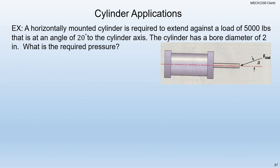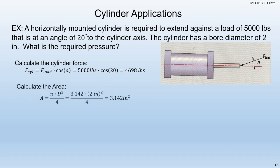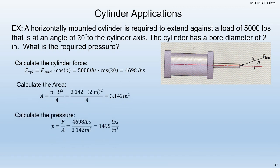For the bearing force, it's going to be 15,000 times sine of 30. So there's how we calculate the two different forces — the cylinder force and the bearing force. You might also get a problem like this: a horizontal mounted cylinder is required to extend against a load of 5,000 pounds at an angle of 20 degrees to the cylinder axis. The cylinder has a bore diameter of 2 inches. What is the required pressure? We calculate force first: 5,000 times cosine of 20. Then calculate the area, and then pressure equals force over area, giving us 1,495 PSI.